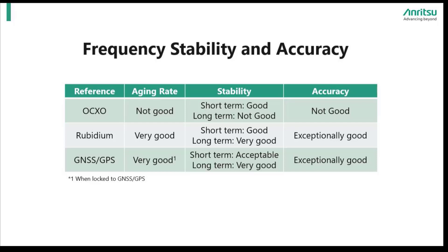Next we have Rubidium and GNSS GPS references. They both display very good aging rates. With negligible differences in stability, users can expect exceptionally good accuracy and now have choices for an accurate reference depending on their specific measurement applications.